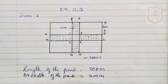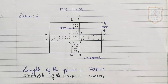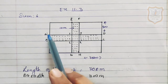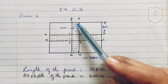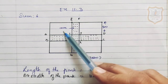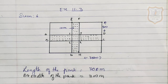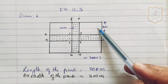Let us solve sum number 6 and before solving the sum let us understand the question with the help of this figure. Here it was given that two crossroads each of width 10 meter cut at right angles through the center of the rectangular park of length 700 meter and breadth 300 meter. We have to find out the area of the road and the area of the park excluding the road.